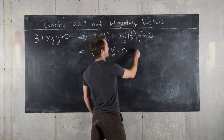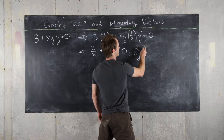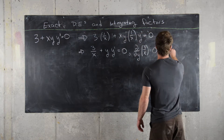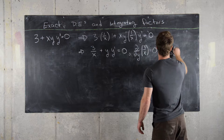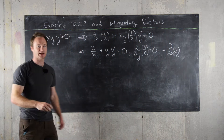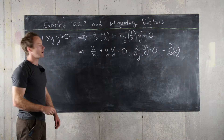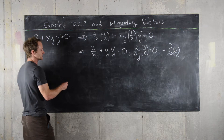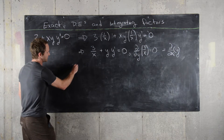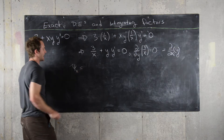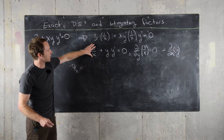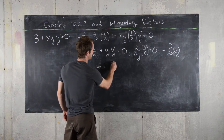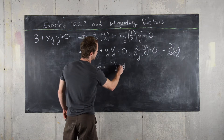So let's see what we get when we do that and check that it is, in fact, exact. This gives us 3 over x plus y times y prime equals 0. The derivative with respect to y of 3/x is equal to 0, and the derivative with respect to x of y is also 0. So this is an exact differential equation. The solutions are given implicitly by some function ψ, where the partial with respect to x is 3 over x.